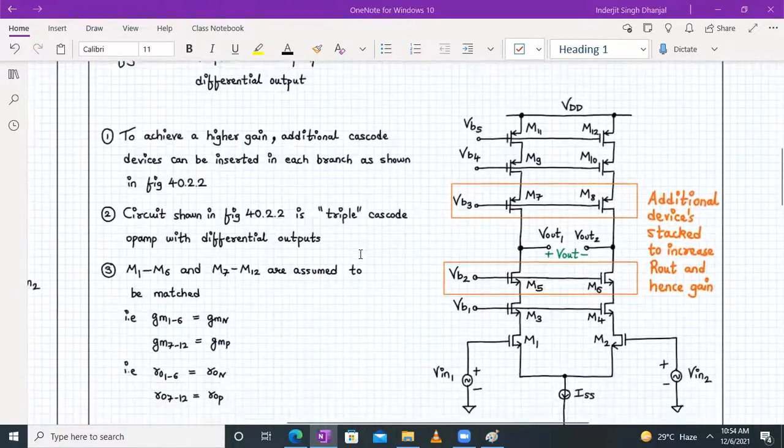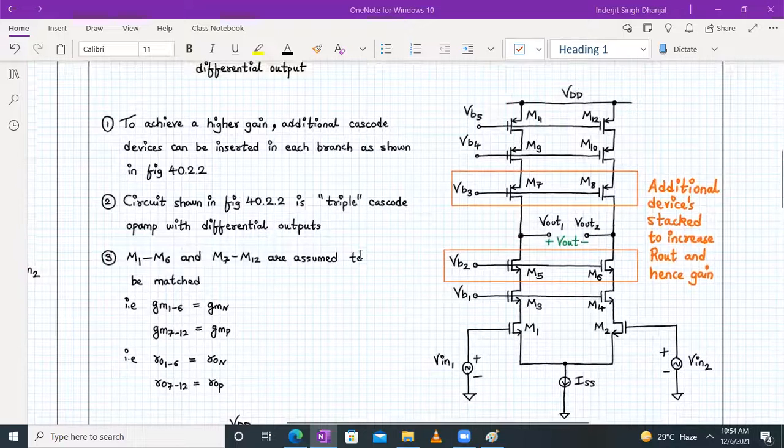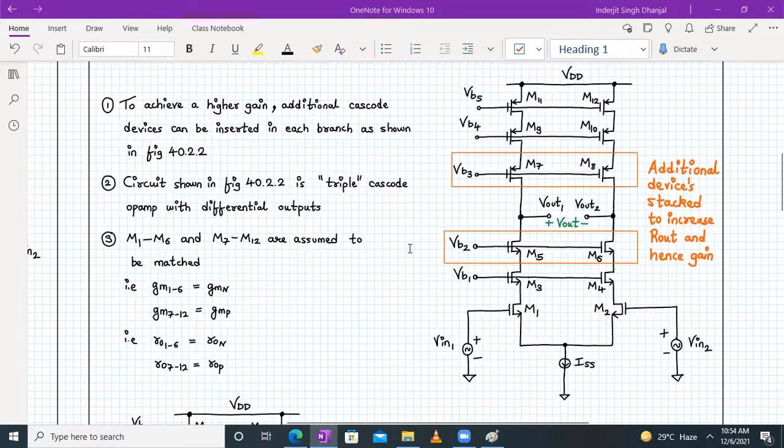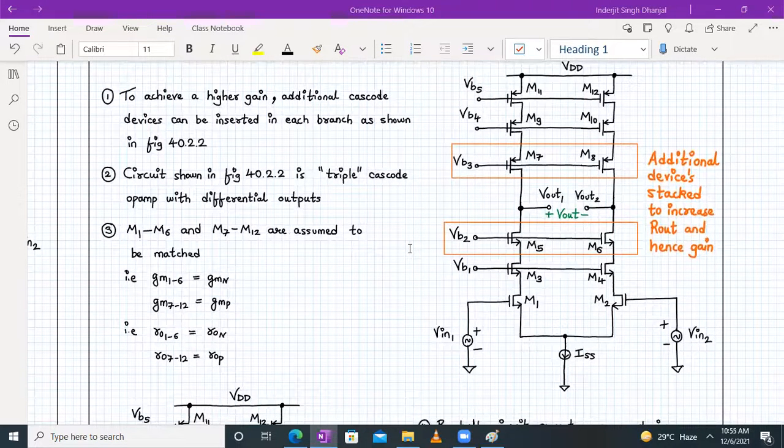That's the difference. These additional devices stacked will increase the Rout value. This is called triple cascode. The circuit shown here is a triple cascode op-amp with differential output. This is done to increase the Rout value and hence the gain value.